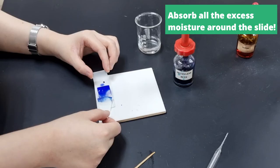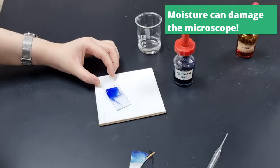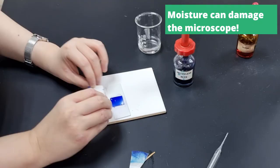So if one filter paper is not enough, use another and just mop up all the excess methylene blue solution around it. You really don't want the slide to be wet when you put it under the microscope. So make sure it's dry on these sides, mop up all the extra, and then it's pretty much ready.